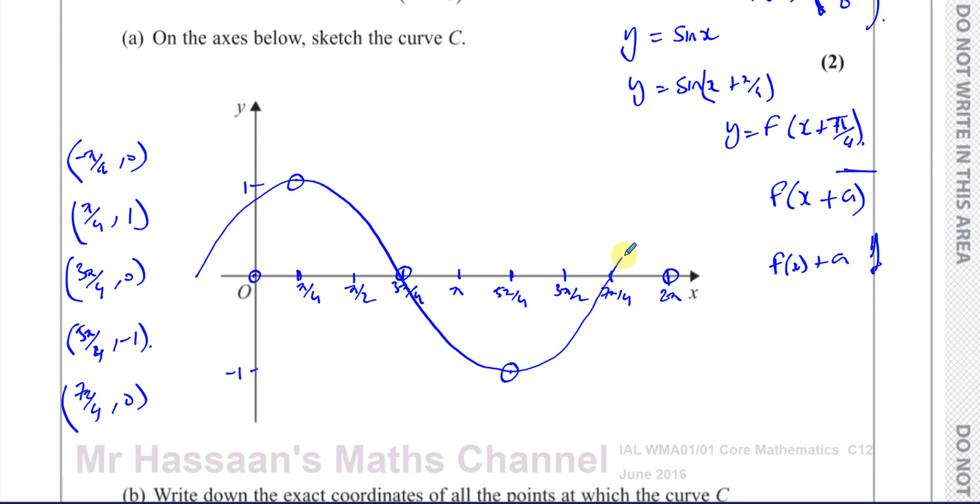This would continue up and end up there. And this would stop because we only have to draw between 0 and 2 pi. So I'm going to get rid of this part. It would go down to minus pi over 4, so we don't actually need that part. So that is now the graph that we wanted, which is y equals the sine of x plus pi over 4.